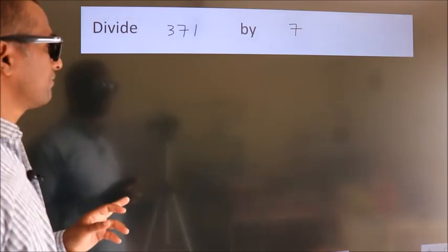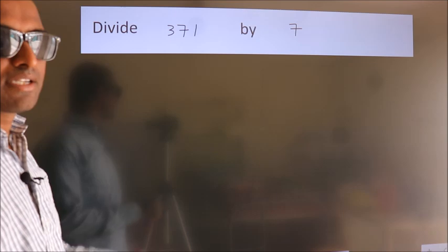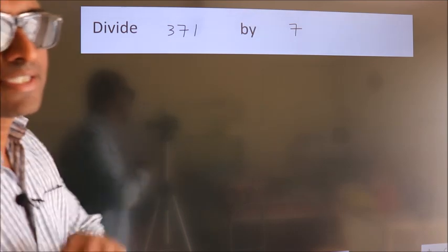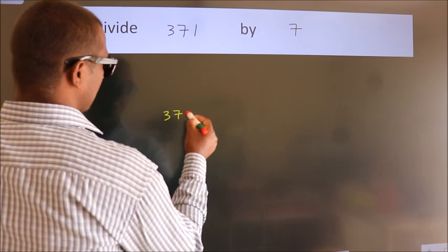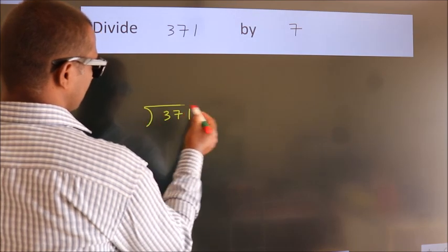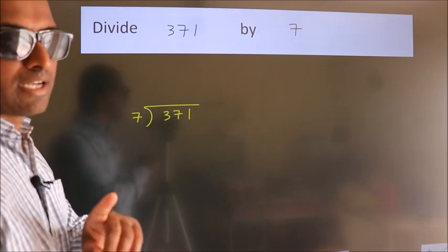Divide 371 by 7. To do this division, we should frame it in this way. 371 here, 7 here. This is your step 1.